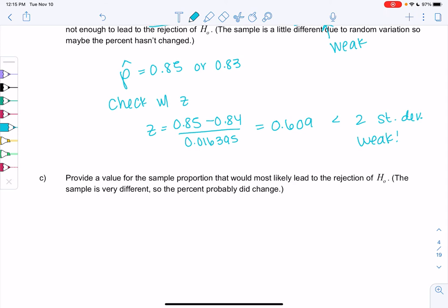All right, and let's do the same thing, but strong. So we want to provide, again, a sample proportion. So that's p-hat. That would most likely lead to the rejection. So that means the sample is very different. I'm convinced the percent changed. So maybe like 90% would convince me.